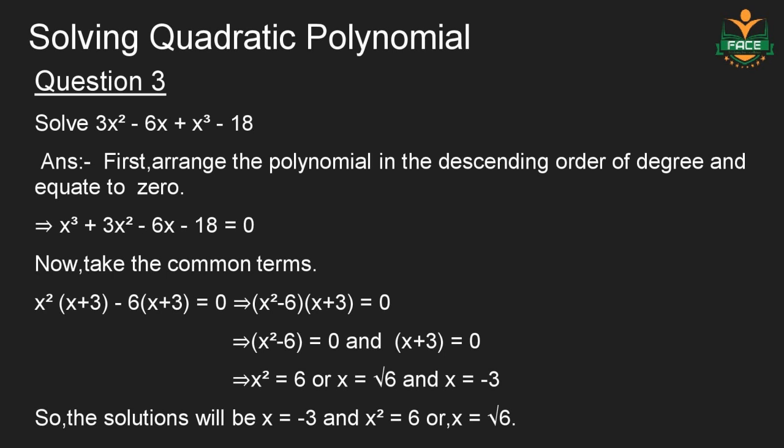Which implies (x squared minus 6) into (x plus 3) is equal to 0. This implies x squared minus 6 is equal to 0 and x plus 3 is equal to 0. So the solutions are x is equal to minus 3, and x squared is equal to 6, or x is equal to root 6.